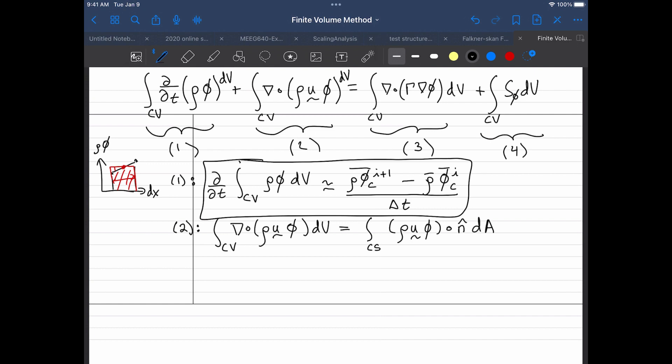Now, just as a reminder, in the divergence theorem, this is always meant to be the outward facing unit normal. So for example, if I have a triangle and that's my control volume slash control surface, and that's my centroid, then the outward facing unit normal is this way.